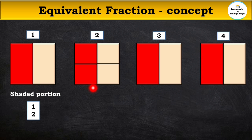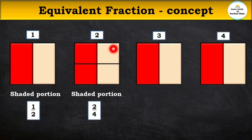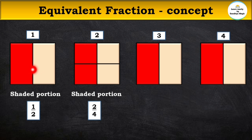When one line is drawn across the same figure, it gets divided into four equal parts. The fraction that shows the colored part is two upon four. There are four equal parts, so the denominator is four, and the numerator is two because two equal parts are colored — the same portion as the first figure.